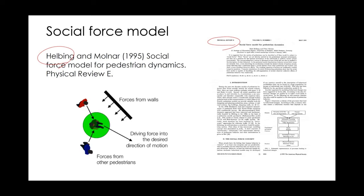The idea behind the social force model is this: in car traffic, we had car following and lane changing. But how can we model the movement of pedestrians? There are no lanes, they're not necessarily following each other, there's a lot of room around, there are obstacles, walls, and they can go in any direction.